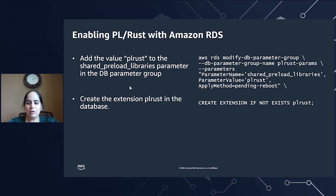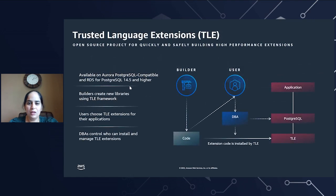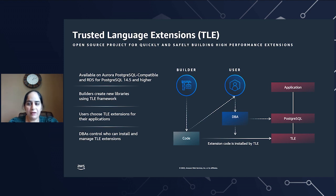Let's take a quick look at Trusted Language Extensions, which is another open source project for building extensions. Trusted Language Extensions is an open source project for building high-performance and safe PostgreSQL extensions. There are a lot of challenges when it comes to installing a new extension in your PostgreSQL database. You need access to the file system underneath to install an extension, or an extension you want to use may not be available with a managed service. PostgreSQL major version upgrades can be very difficult and you might need to upgrade your extensions to work with a new major version. Supporting new extensions is a time-consuming task because we want to make sure that an extension is safe to run in your database.